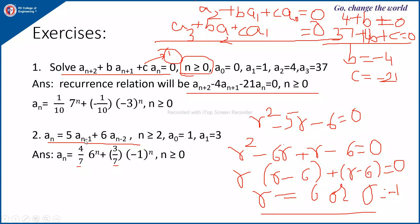Next example: An = 5·An-1 + 6·An-2. The characteristic equation is R² - 5R - 6 = 0. The roots are R = 6 and R = -1. By substituting R1 = 6 and R2 = -1, the general solution is An = C1·6^n + C2·(-1)^n. By substituting n = 0 and n = 1, two linear equations are obtained, and solving them gives the values of C1 and C2. The solution is An = (4/7)·6^n + (3/7)·(-1)^n, for n ≥ 0.